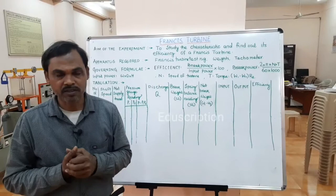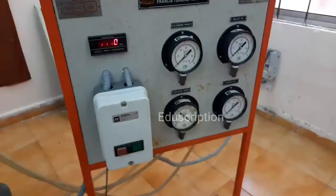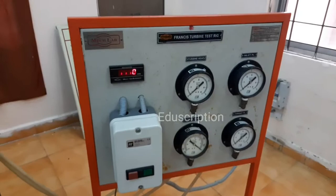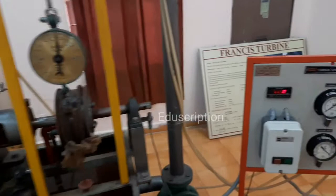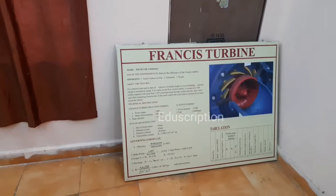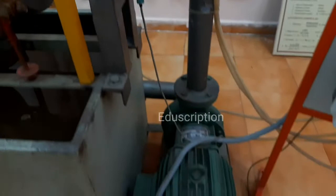In the theory part, in a reaction turbine a part of the water energy is converted into kinetic energy at the entrance and the other part remains in the form of pressure energy. As water flows through the runner, this pressure energy is converted into kinetic energy, so the pressure is high at the inlet and gradually decreases at the outlet. Briefly, both pressure energy and kinetic energy are converted into mechanical energy.